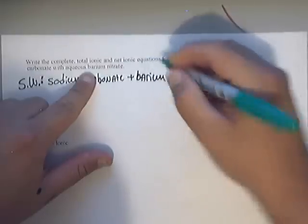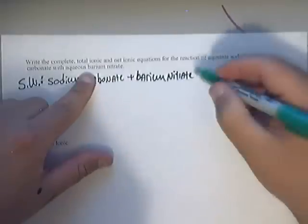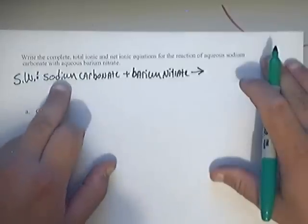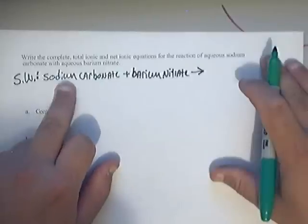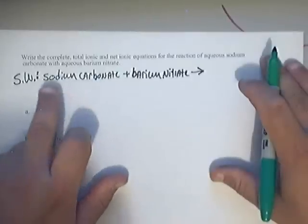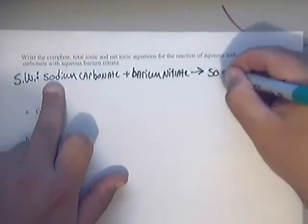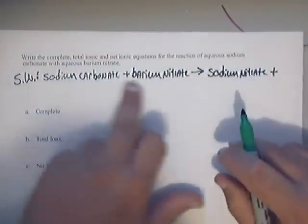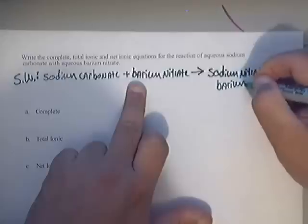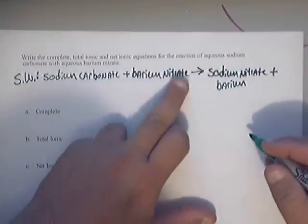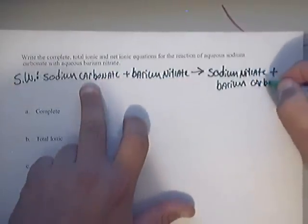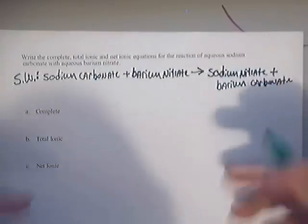And they have barium nitrate. Now all they have to do is write a word equation for their products. I take the first word, which is a metal, and put it with a different second word. I'm going to take sodium and put it with nitrate, so I write sodium nitrate. And on the other one, I'm going to take barium and put it with a different second word, so I take barium and put it with carbonate.